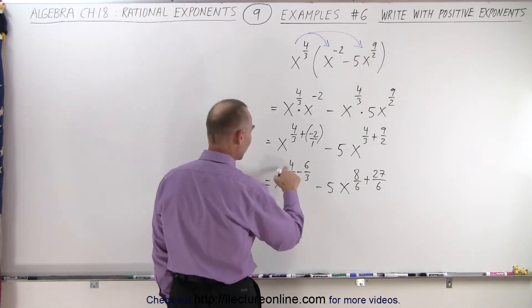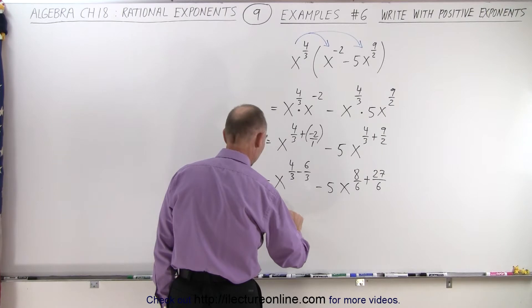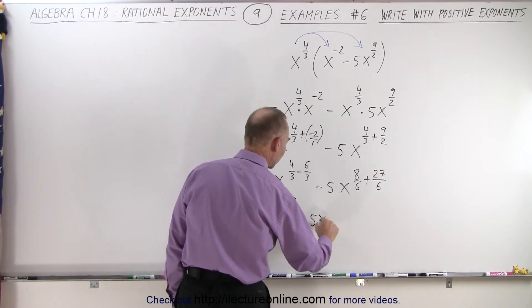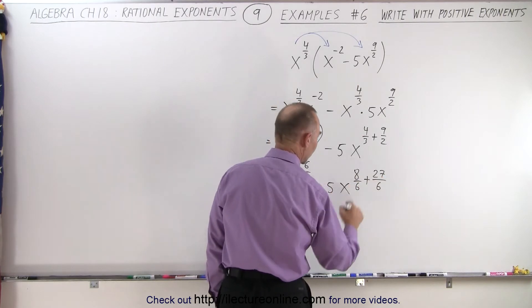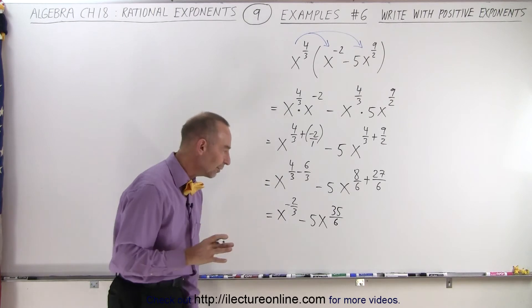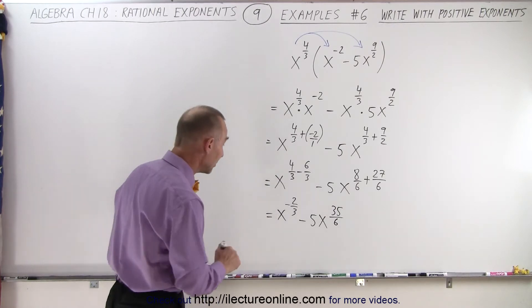So this can be written as 4 minus 6, which is -2, x to the -2/3. Minus 5x to the... 8 plus 27 is 35/6. That cannot be simplified anymore.